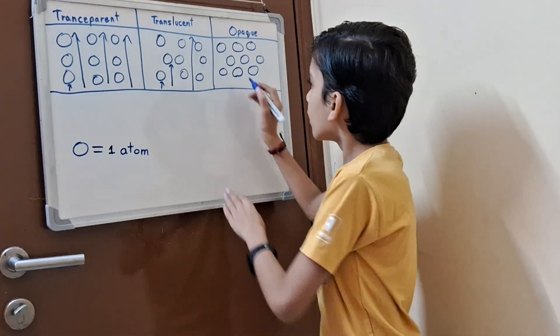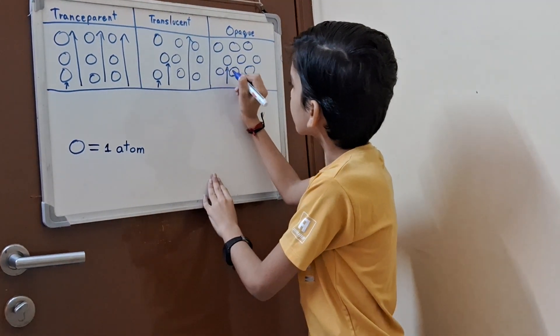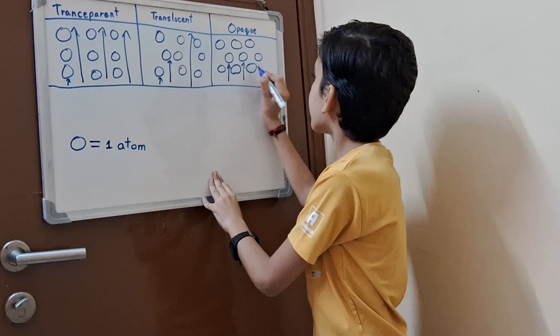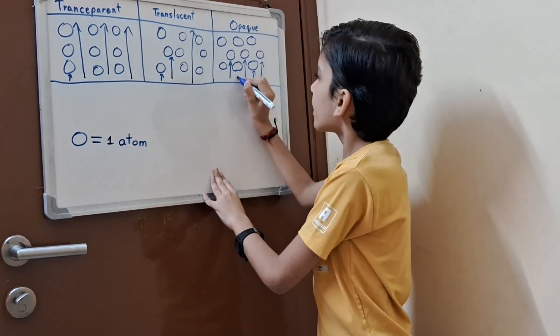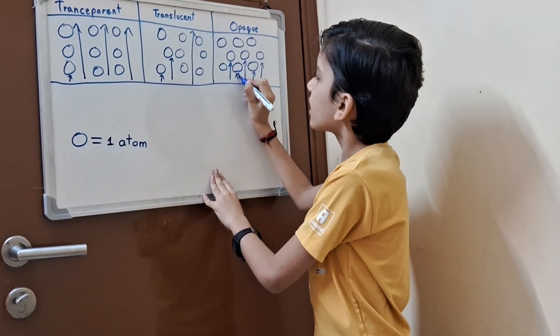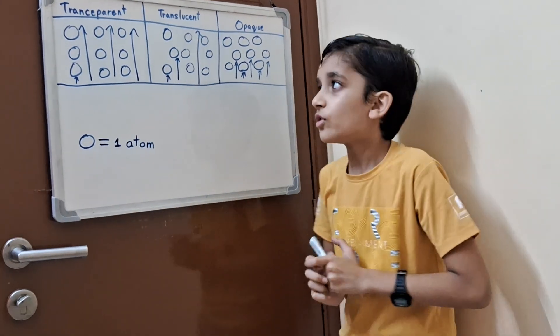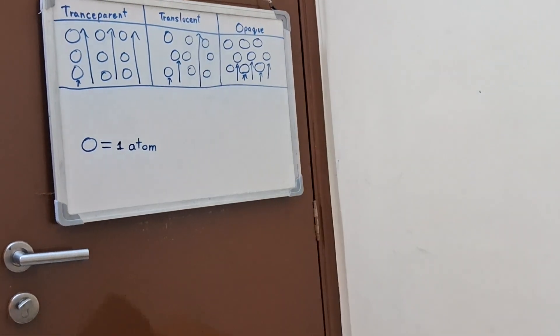But with opaque, no light could pass. See, here also blockage, here also, here also, here also. Everywhere light can't pass. So this is opaque.